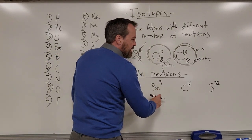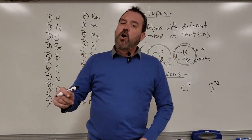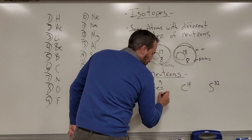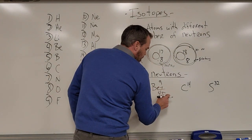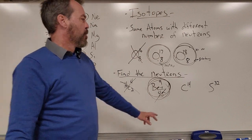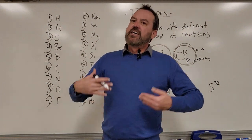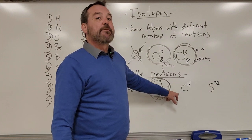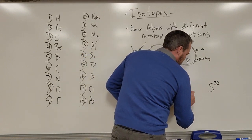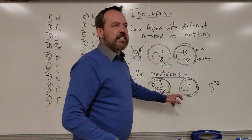Beryllium BE-9: beryllium is number 4, so 4 protons. 9 minus 4 equals 5 neutrons. Since 4 and 5 are not the same number, this is an isotope. Carbon-14: atomic number for carbon is 6, so 6 protons. Normally it would weigh 12, but it's 14, meaning 14 minus 6 gives 8 neutrons. That is 100% an isotope.